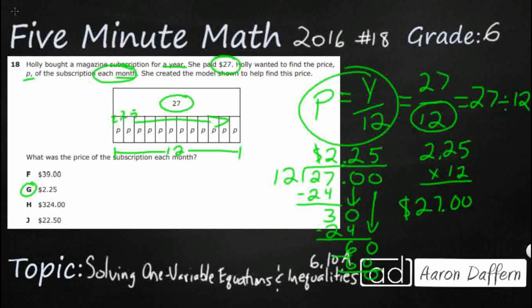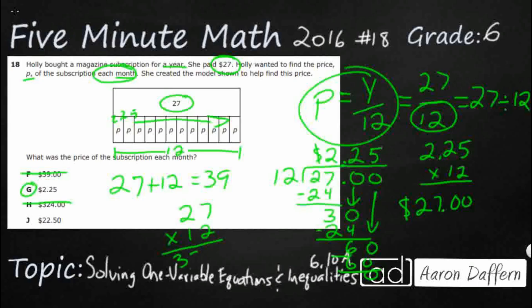So how did students get some of these other answers? It is always interesting to see how incorrect answer choices are reached. Take the answer 39 — you take your 27 and your 12 months and add them together. The number one thing students do when unsure is take all the numbers and add. Even though 12 doesn't appear directly, you can count the 12 pieces and get 39. If adding doesn't work, you can multiply: 27 times 12 gives you 324. But that makes no sense — how could the entire year cost $27 yet each month cost $324? Same with 39: how could the year cost $27 but each month cost $39?